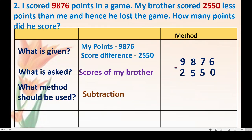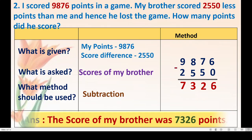We subtract: 6 minus 0 equals 6; 7 minus 5 equals 2; 8 minus 5 equals 3; 9 minus 2 equals 7. My brother scored 7,326 points. Answer: the score of my brother was 7,326 points. I hope you understood the sum.